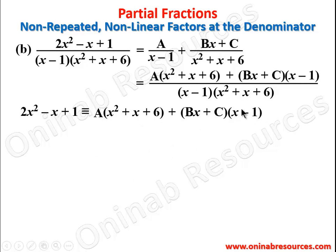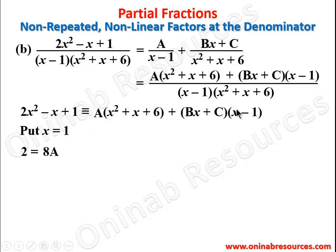We set x − 1 = 0, so x = 1. Substituting x = 1: left side gives 2 − 1 + 1 = 2. Right side: A(1 + 1 + 6) = 8A, and (1 − 1) = 0 eliminates B and C. So 2 = 8A, giving A = 1/4.